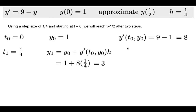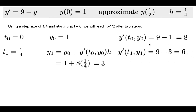Now we plug y = 3 into the differential equation to find the slope at our new point: 9 - 3 = 6. So the slope at our new point is 6.